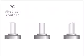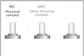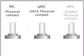There are three main types of polishes that can be applied to a fiber connector: PC, or physical contact; UPC, or ultra-physical contact; and APC, or angled physical contact.